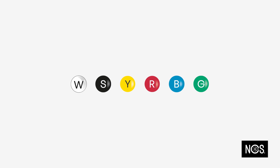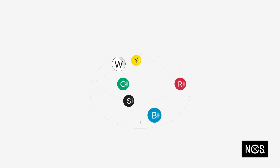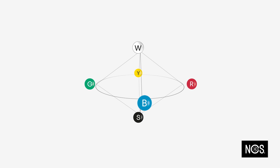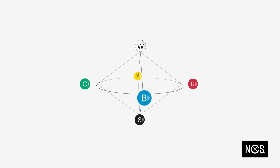NCS defines all colors that we see in relation to the six elementary colors: white, black, yellow, red, blue, and green. They form the NCS color space and describe the hue and the nuance of each color.